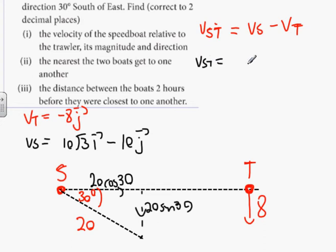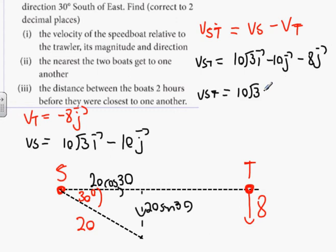VST is going to be 10 root 3 i minus 10j minus another 8j. Actually, that's a plus - minus minus makes a plus, which makes it minus 2j. So VST is 10 root 3 i minus 2j.